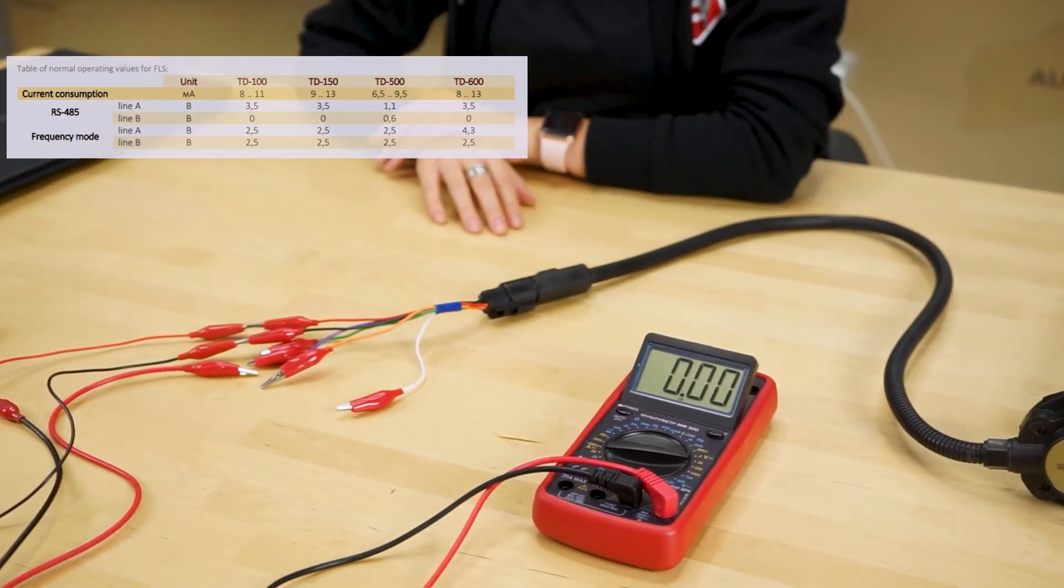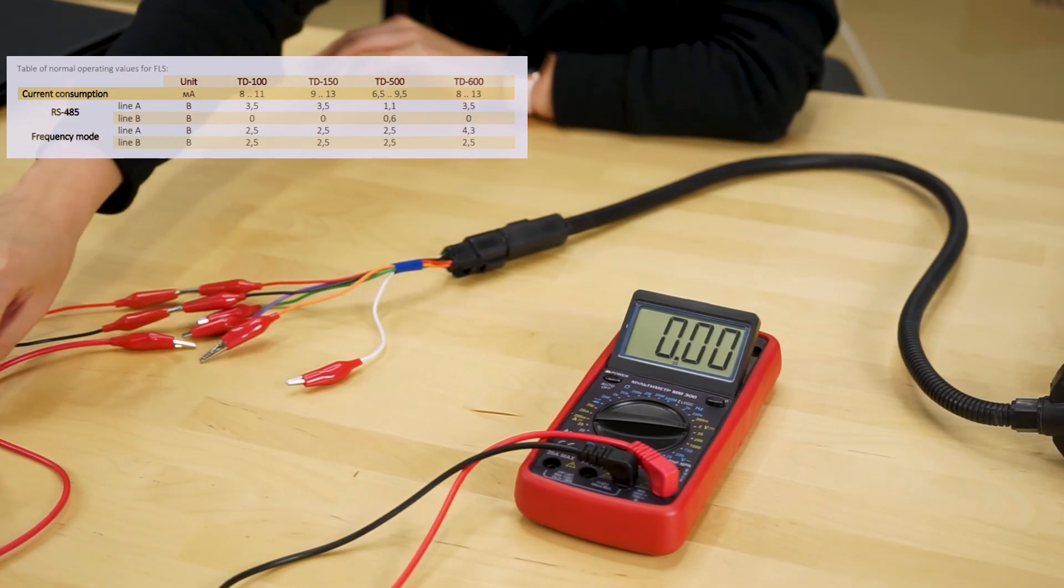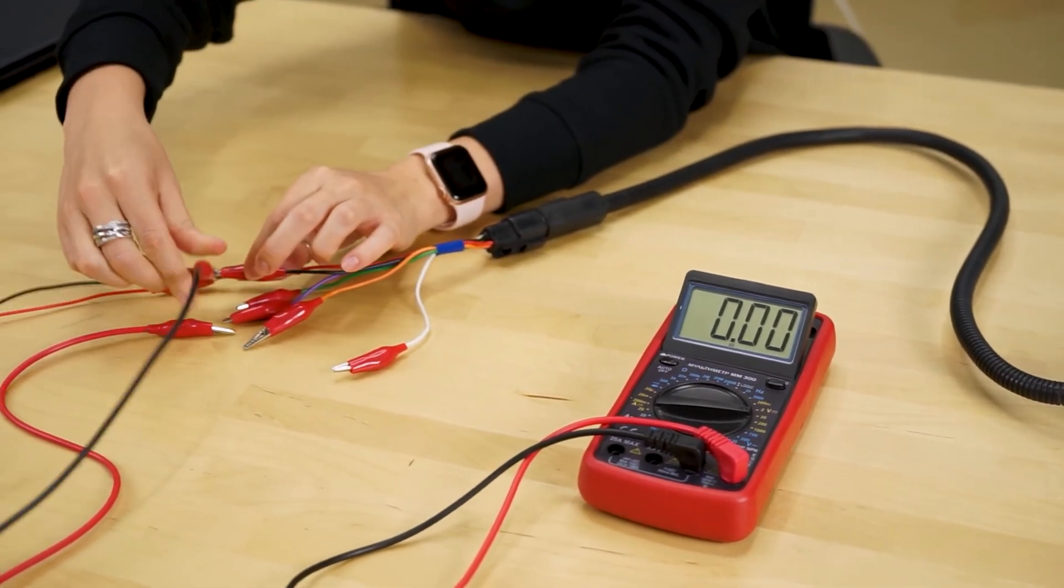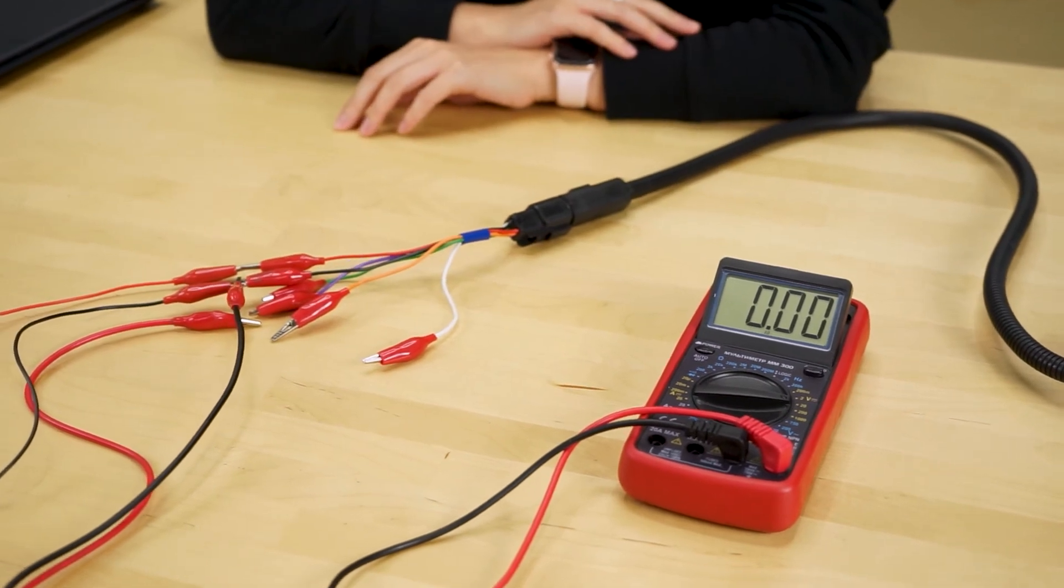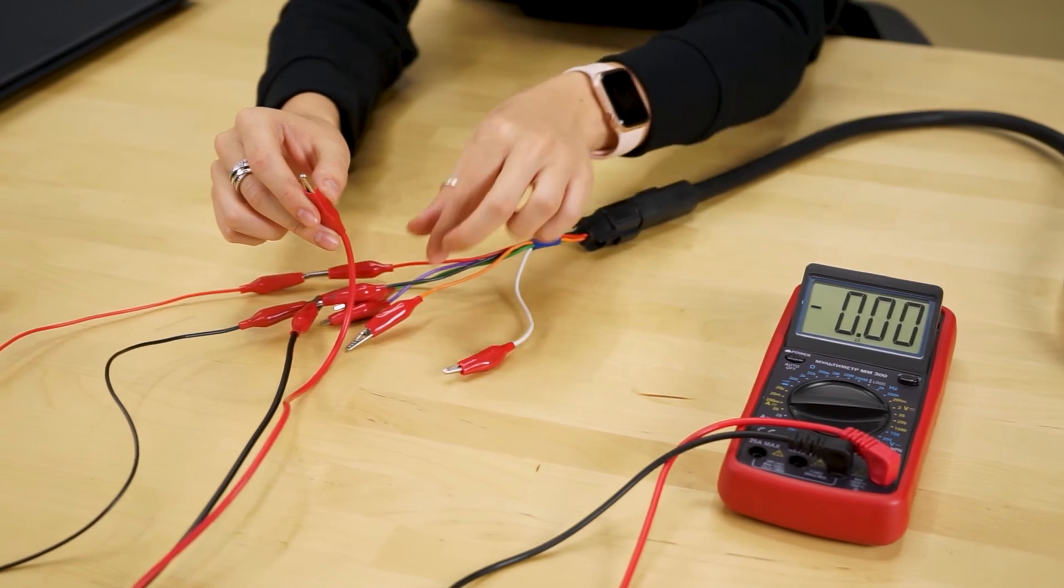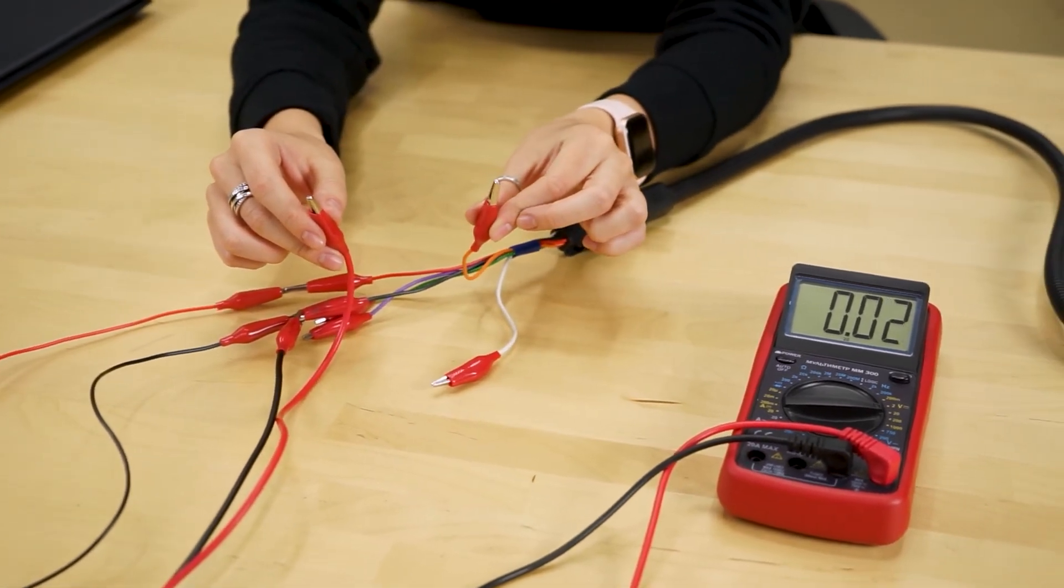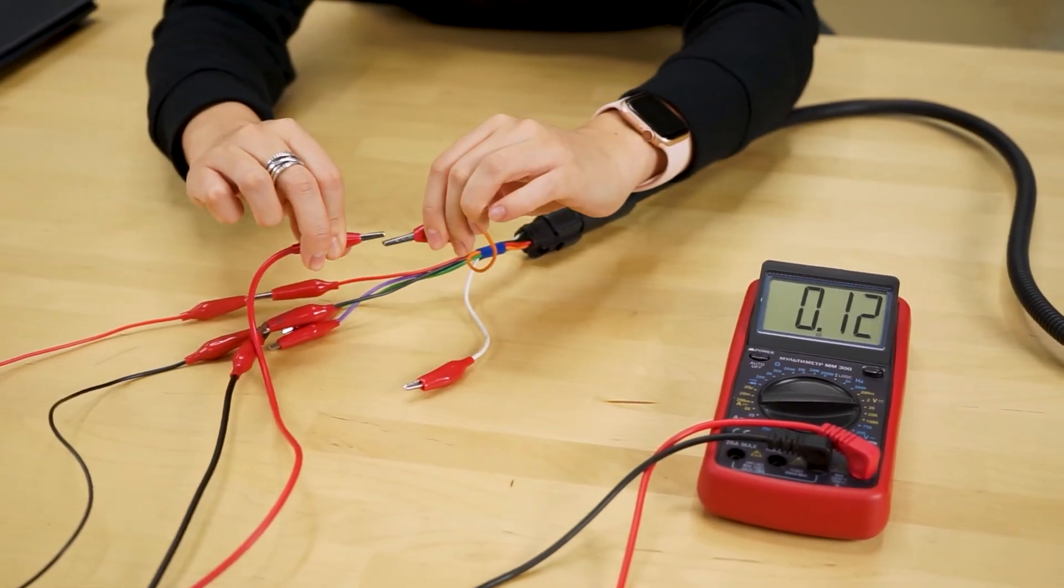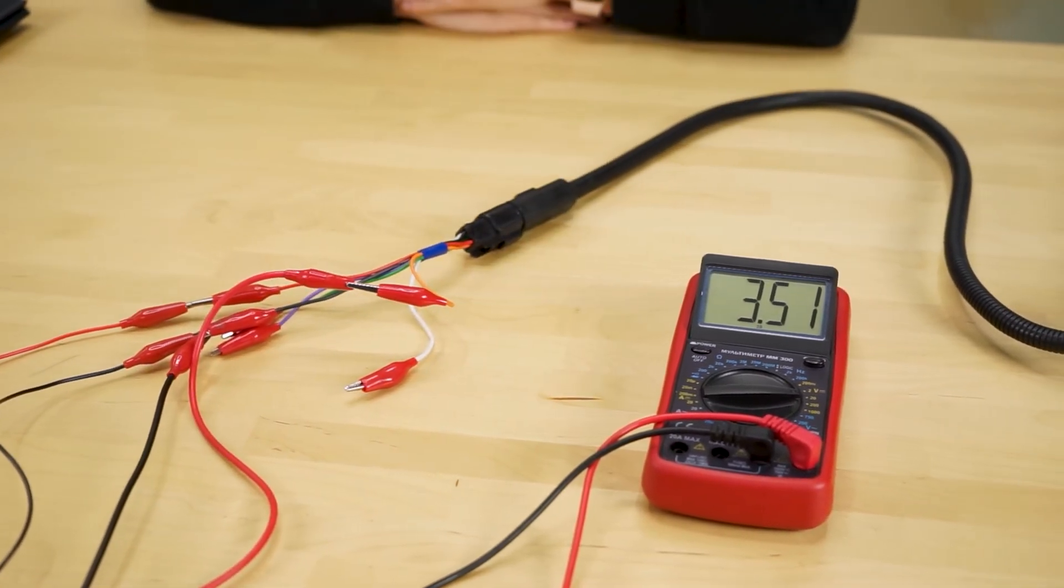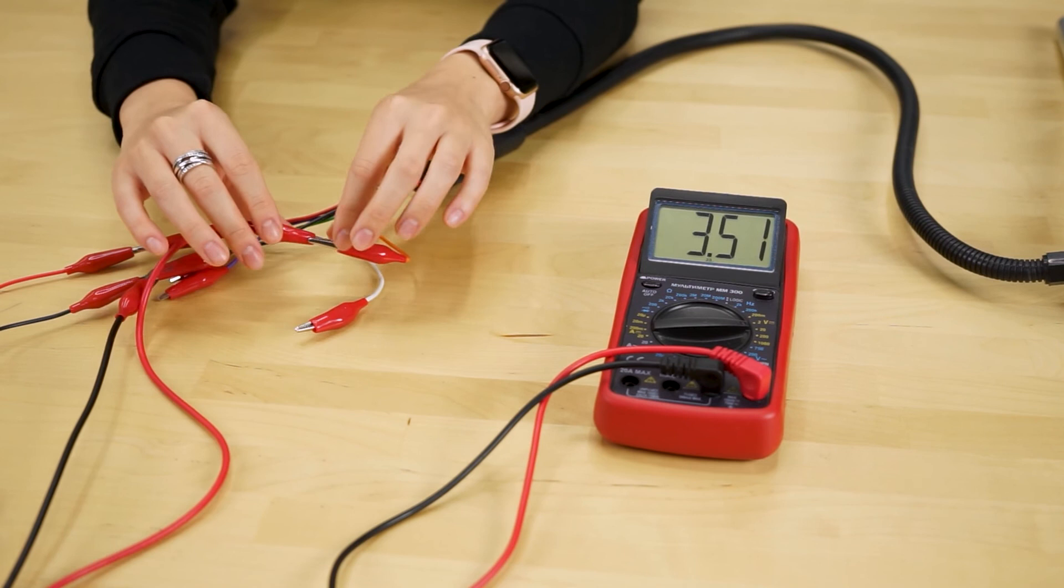To do so, connect one of the multimeter's cables to the negative of the sensor and the other one to the output that needs to be checked, for example the line A of the RS485 interface, the orange cable. The voltage there must be around 3.5 volts if the sensor is working in the RS485 mode. On the white wire there should be zero volts.